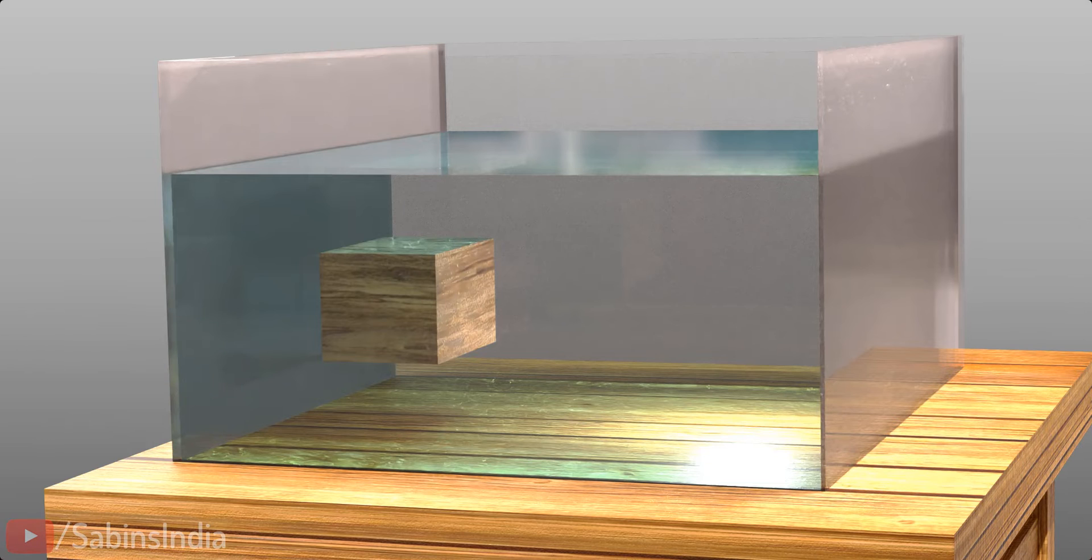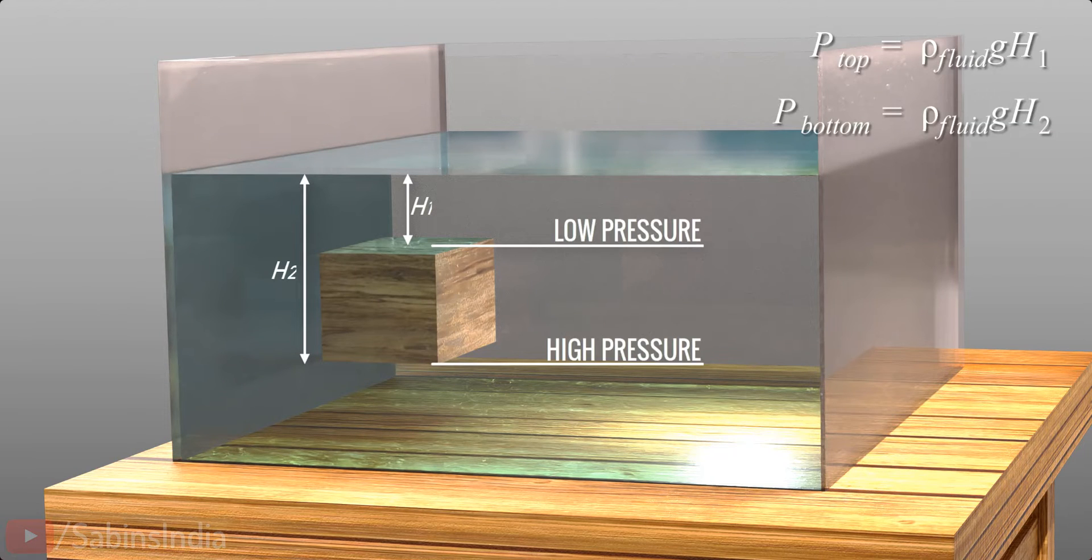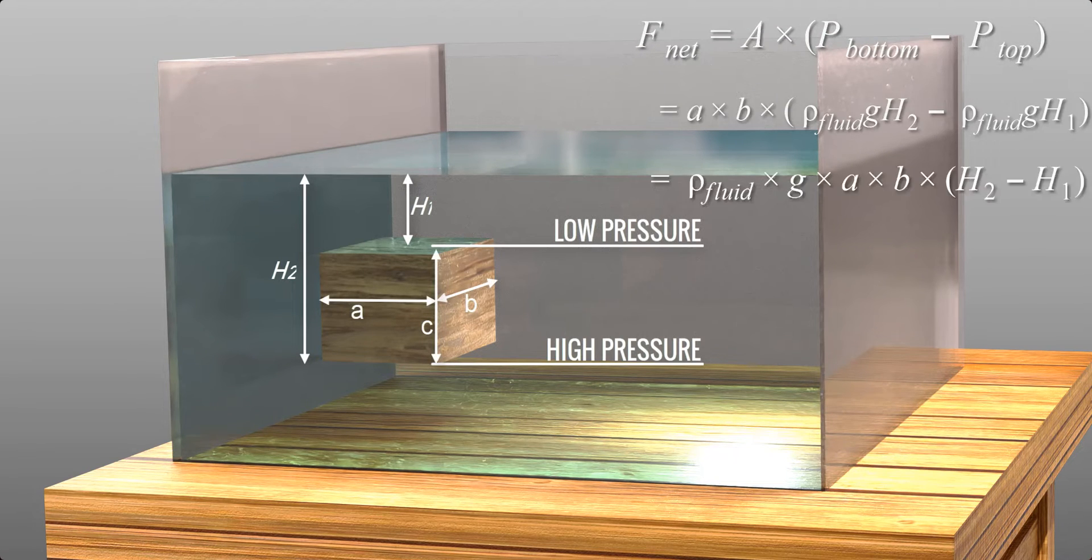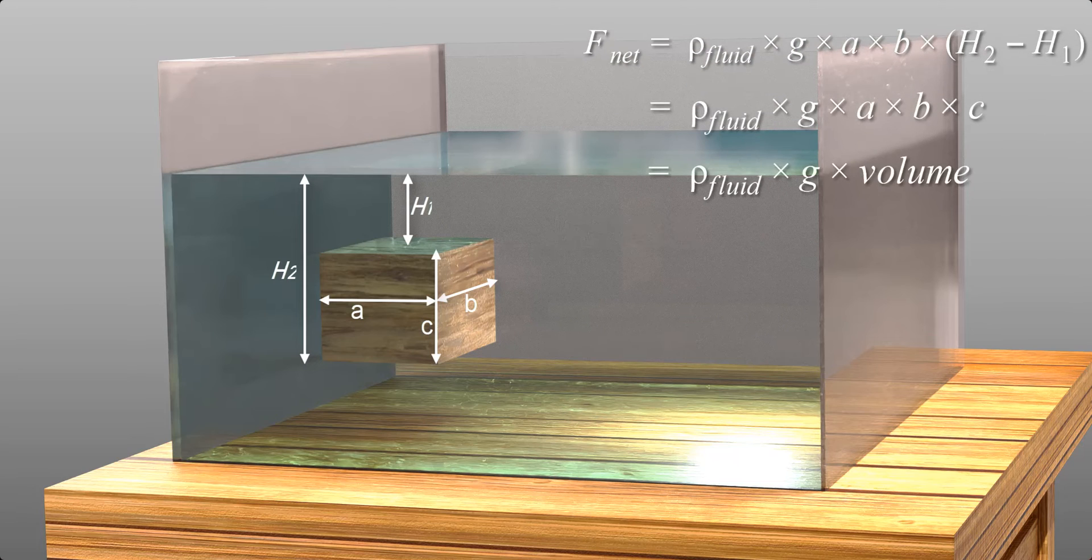The pressure is different at the top and bottom of an object due to the height difference. And this pressure difference causes buoyancy force. Let's derive the values of these pressures mathematically. You can see that the resultant force is the same as that of the weight of the displaced fluid volume.